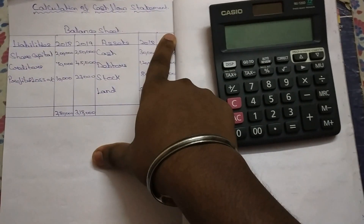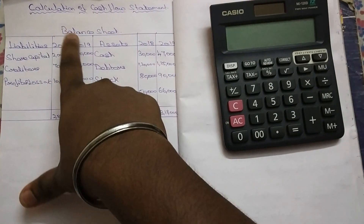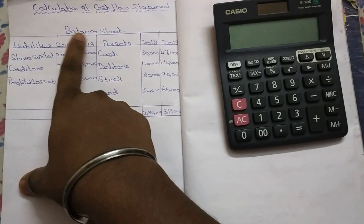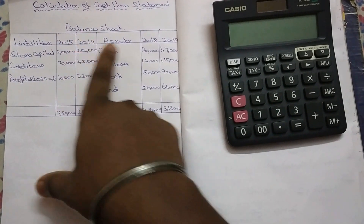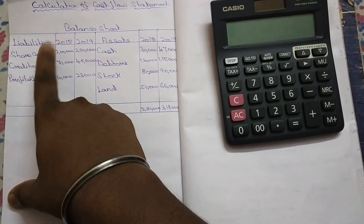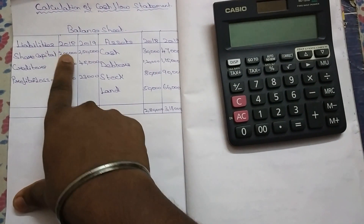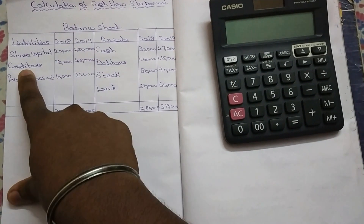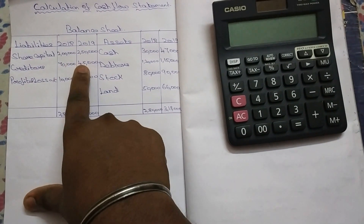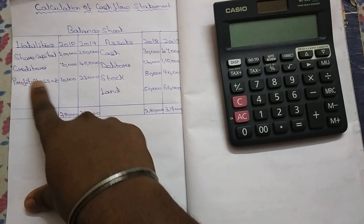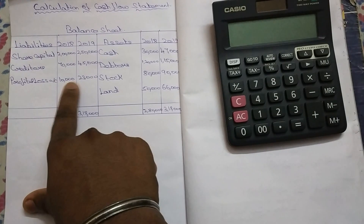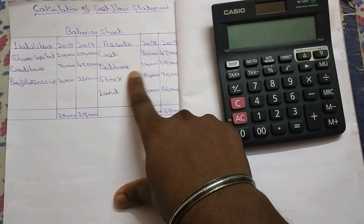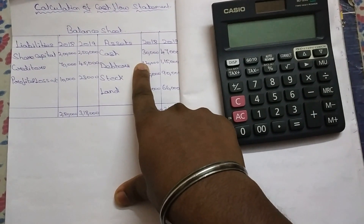We have the cash flow statement and we have the balance sheet. Share capital 2018–2019: we have the share capital figures — 2,00,000 and 2,50,000. Credit or debentures: 70,000 and 45,000. Profit and loss account: 10,000 and 23,000. Cash, debtors, stock, land.